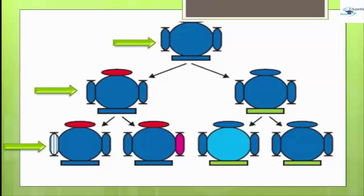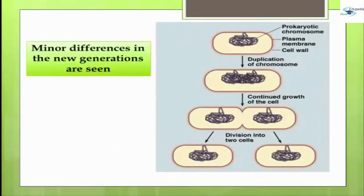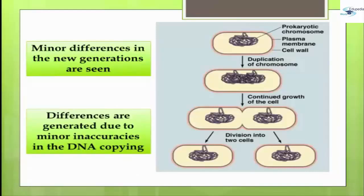For example, if one bacterium divides and then the resultant two bacteria divide again, the four individual bacteria would be very similar, with only very minor differences between them. These differences are generated due to minor inaccuracies in the DNA copying.